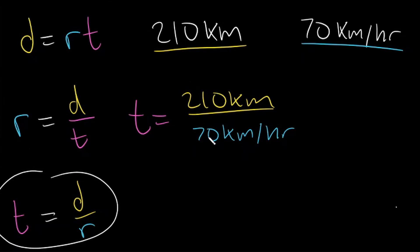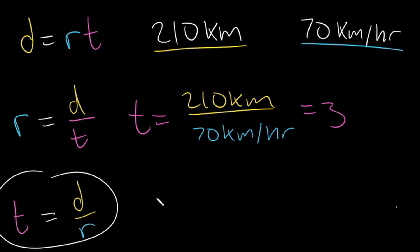210 divided by 70 — we can cancel the zeros, and 21 divided by 7 is 3, so 210 divided by 70 is also equal to 3. Our unit is obviously going to be a time unit, and our time unit here is hours. Let's figure out how we get that unit: we have kilometers divided by kilometers per hour.